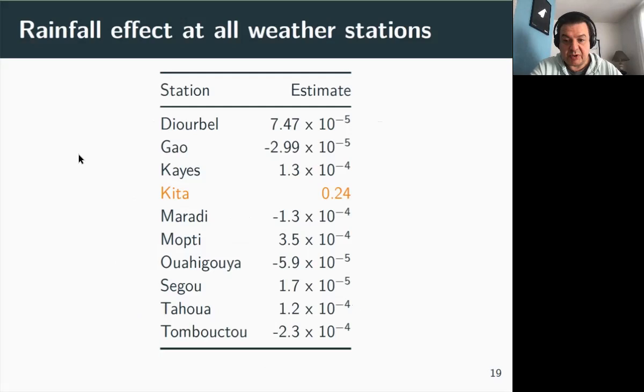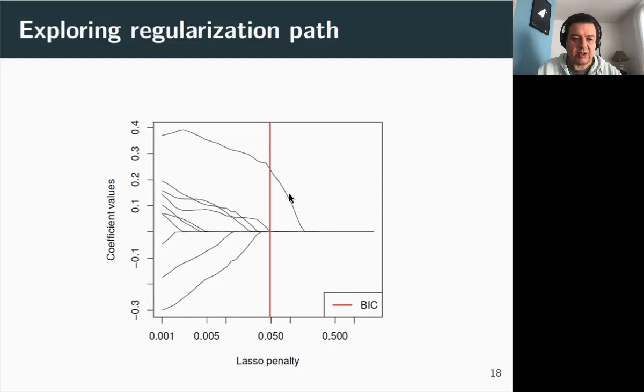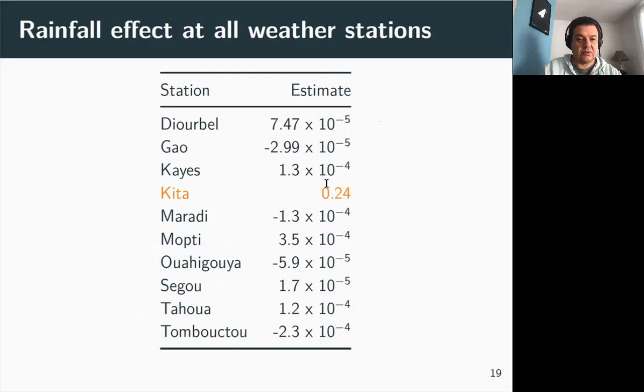Let's have a look to the table of parameter estimates. On the left you have the name of the 10 weather stations, and on the right you have the corresponding beta estimates. All the parameters are estimated at zero roughly, very small, except one for Kita, this weather station here. And it corresponds exactly to this coefficient, the path of this coefficient here. As the penalty increases, and even past this threshold here, this parameter is still non-zero. So this is the only one.